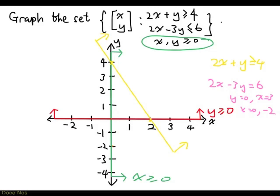So we have to draw the line through (0, -2) and (3, 0). And it's going to look something like this. This is the line defined by 2x minus 3y equal to 6.